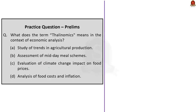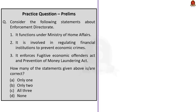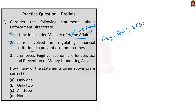Moving on to the second question: three statements about the Enforcement Directorate are given, and we have to find how many are correct. The first statement — it functions under the Ministry of Home Affairs — is incorrect because it comes under the Department of Revenue, which is in the Ministry of Finance. The second statement — it is involved in regulating financial institutions to prevent economic crimes — is also incorrect because it does not regulate financial institutions; that is done by financial regulators such as RBI, SEBI, IRDA, etc. The Enforcement Directorate is only involved in investigating violations of economic crimes. The third statement — it enforces the Fugitive Economic Offenders Act and the Prevention of Money Laundering Act — is correct. So only one statement is correct, and the correct answer is option A.